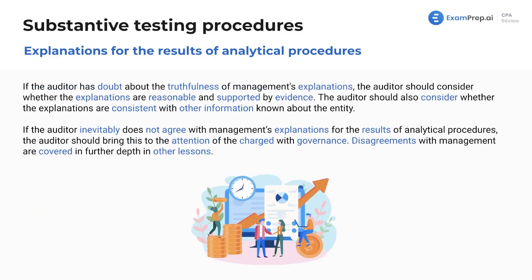If the auditor has doubt about the truthfulness of management's explanations, the auditor should consider whether the explanations are reasonable and, most importantly, supported by evidence. If management gives an explanation and provides evidence that is independent and properly assessed, that should be acceptable. The auditor should also consider whether the explanations are consistent with other information known about the entity.